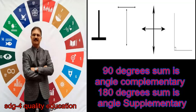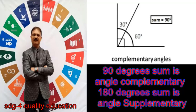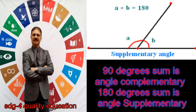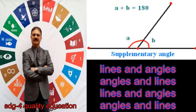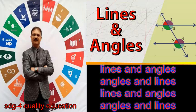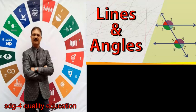90 degree sum is Complementary Angle. 180 degree sum is Supplementary Angle. Lines and Angles, Angles and Lines.